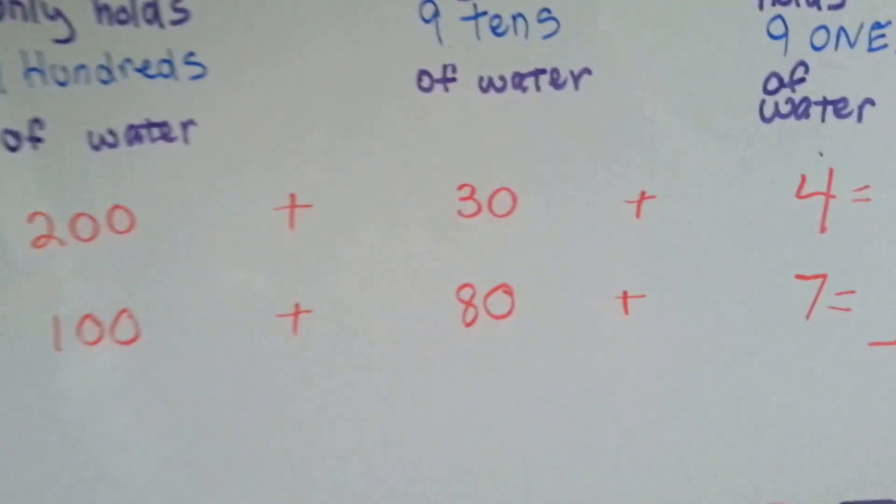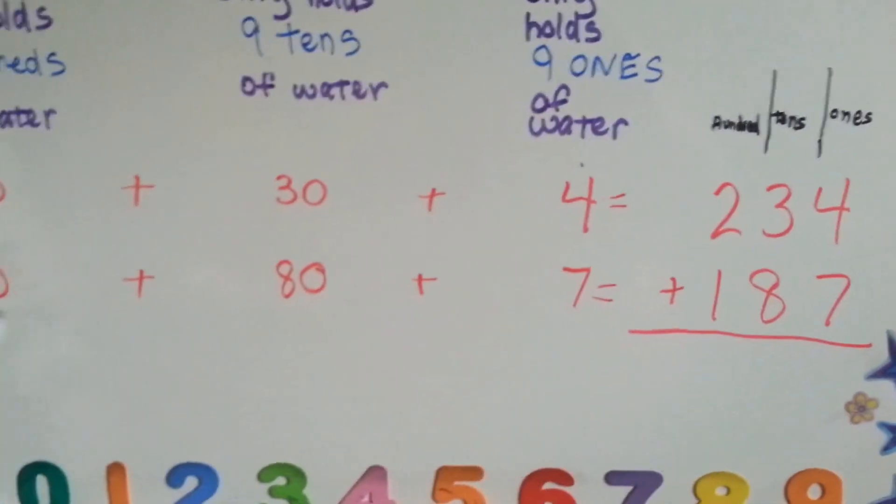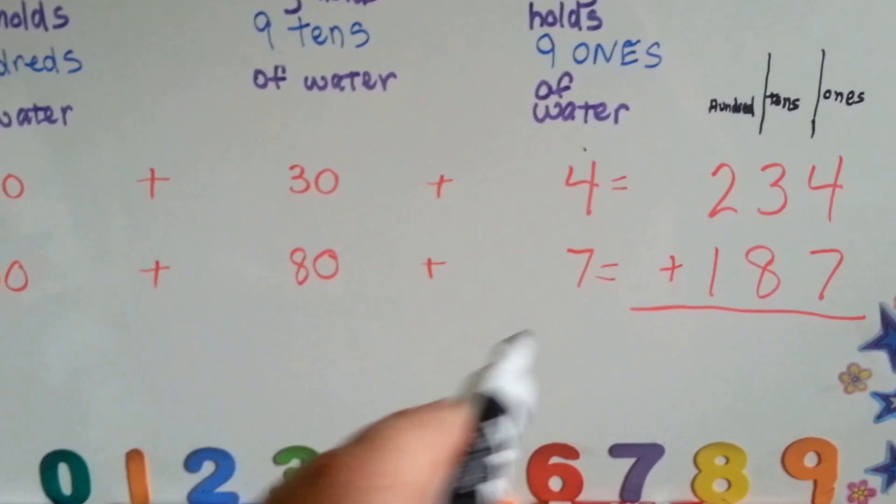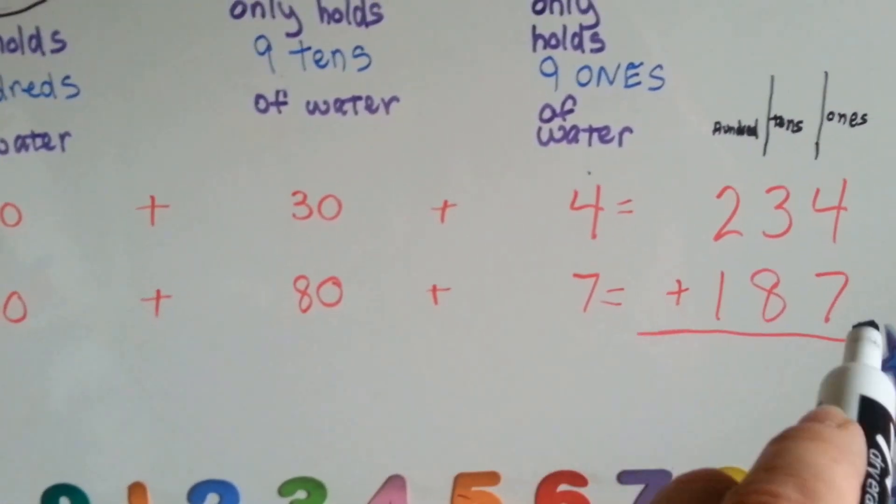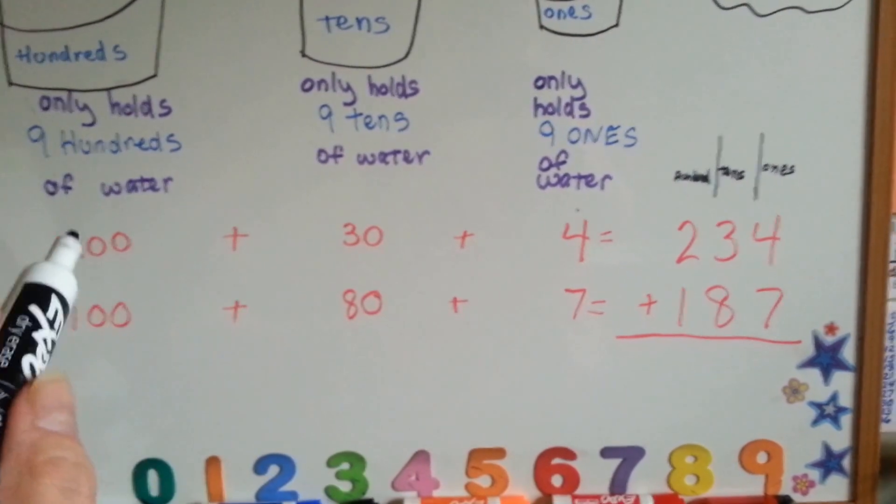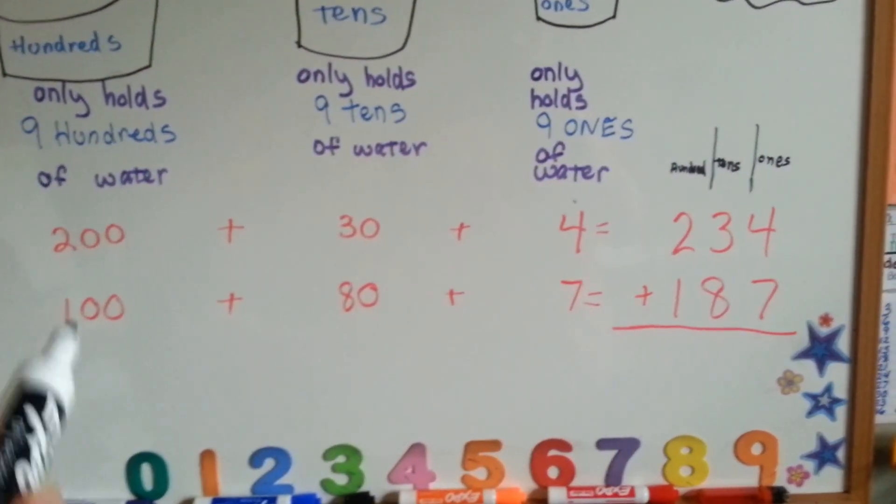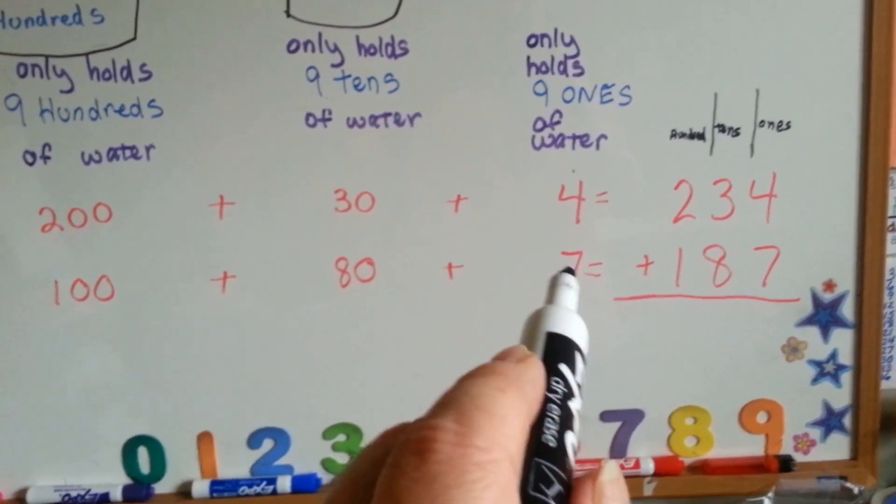So, let's look at this addition problem. We have 200, and 30, and 4. 200 and 34. We have 100, 80, and 7. 187. That means there's 2 hundreds, 3 tens, and 4 ones. And 100, 8 tens, and 7 ones.